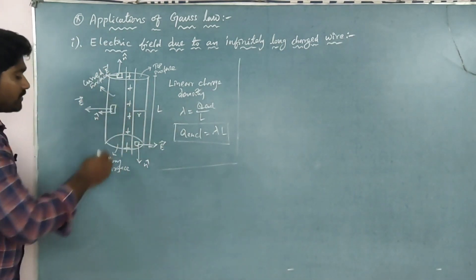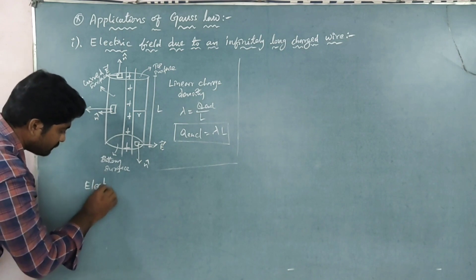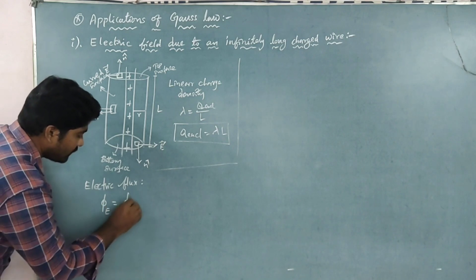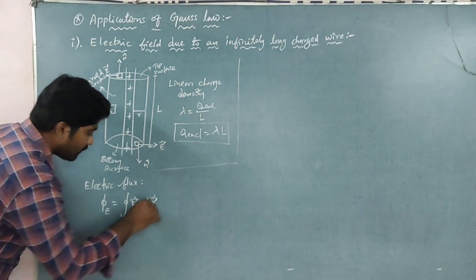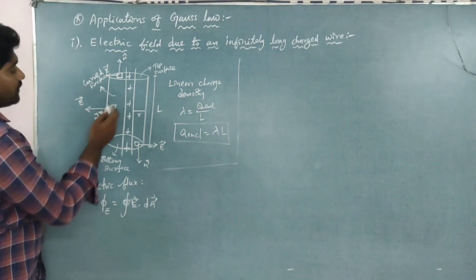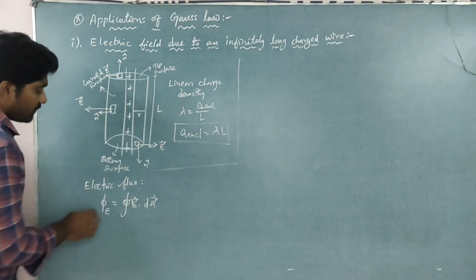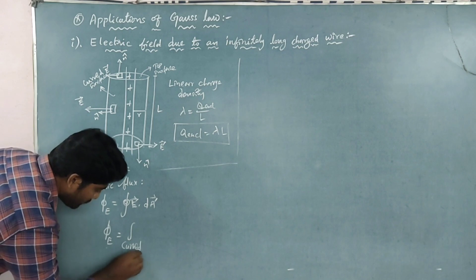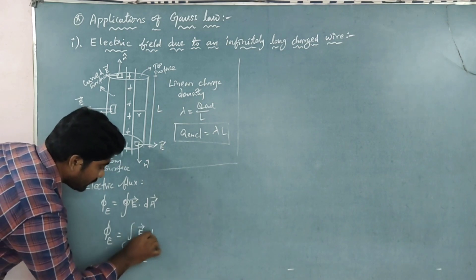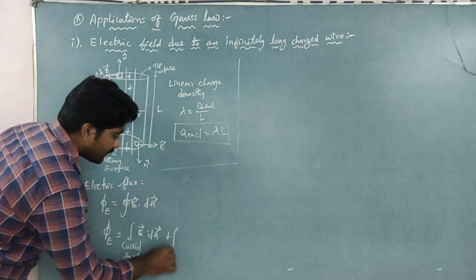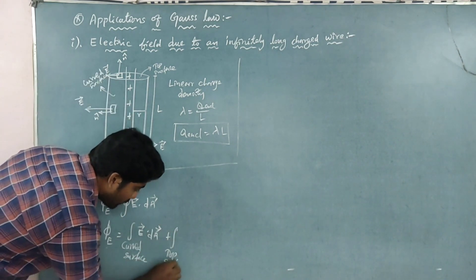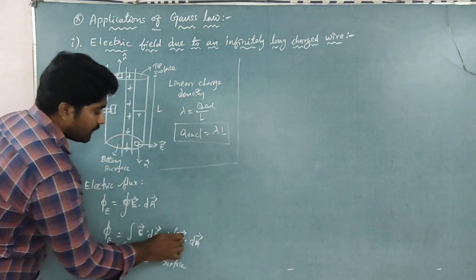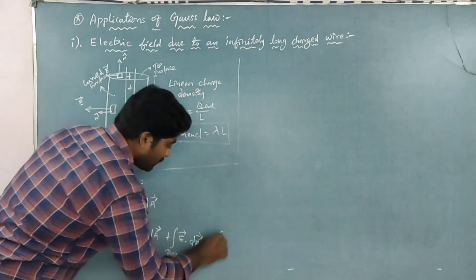The basic formula is of electric flux. Phi E will be equal to the closed integral of E vector dot dA vector. If we want to find it for our surface, we split it into curved surface, top surface, and bottom surface: phi E equals the integral over the curved surface of E dot dA, plus the integral over the top surface of E dot dA, plus the integral over the bottom surface of E dot dA.